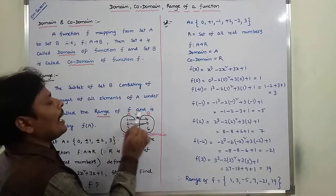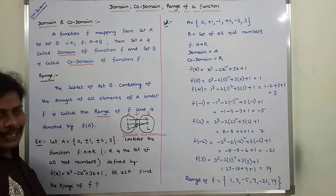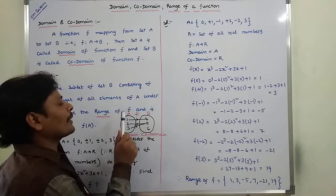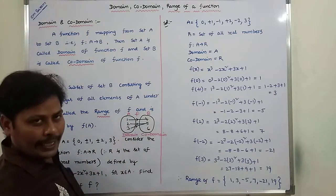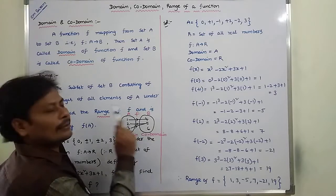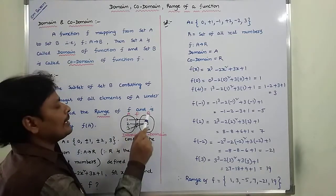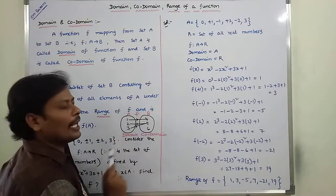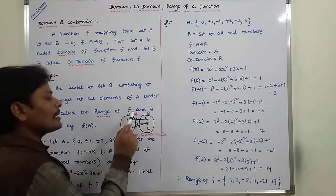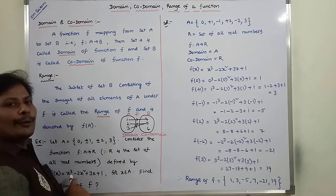Here, A and B are two finite sets. F is a function mapping from set A to set B. Set A contains three elements: 1, 2, 3. And set B contains three elements: 4, 5, 6. That means a function F from A to B.